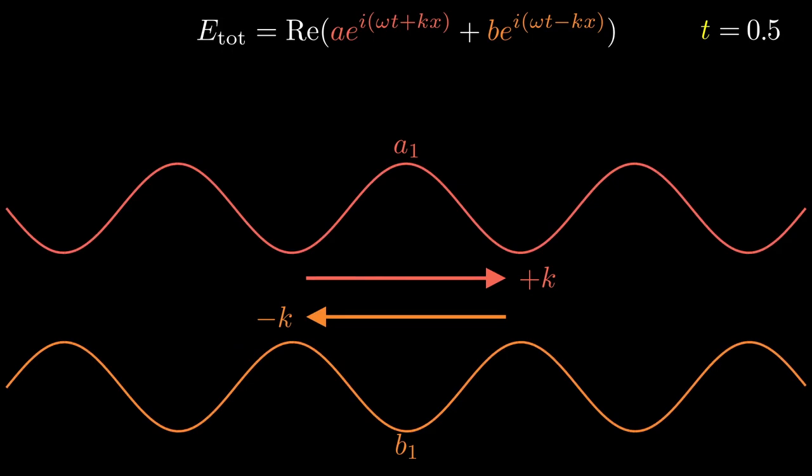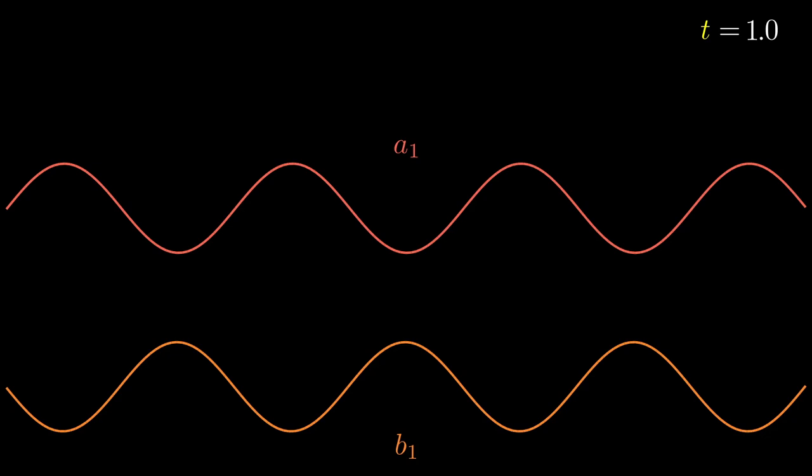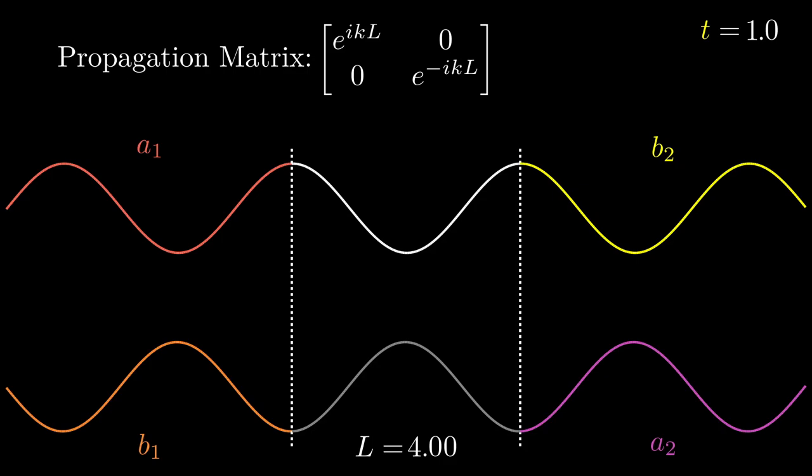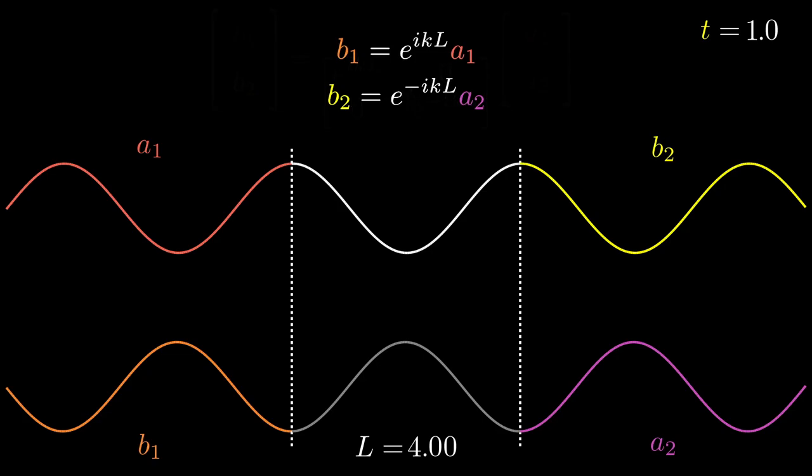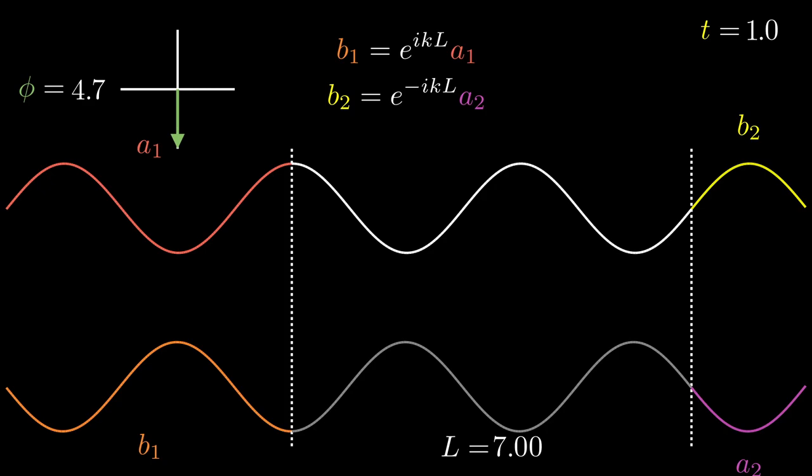Now I want to introduce a concept called the propagation matrix. We introduce an arbitrary length L and split our beams into two parts. The propagation matrix describes how each beam evolves as it travels through this distance L. We can multiply our input, or A beams, by our output, or B beams, and multiply the matrices out. We can create a dial to visualize the phase accrued by each beam as it propagates through this distance, as we change the distance.